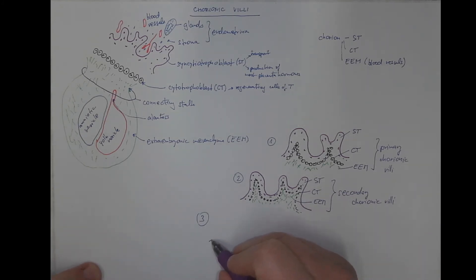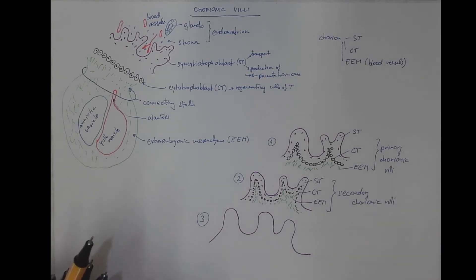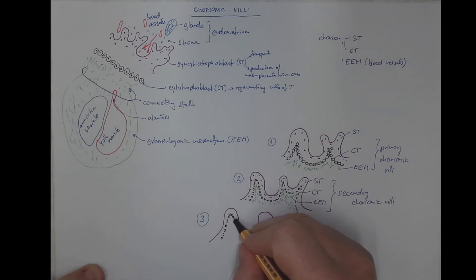The blood vessels originate within the extra embryonic mesenchyma through a process called vasculogenesis. So we got the syncytiotrophoblast on the surface, then a layer of cytotrophoblast cells, a connective tissue core, but this time including the blood vessels that have differentiated from the mesenchymal cells of the extra embryonic mesenchyma. I'm adding now the nuclei of the endothelial cells.